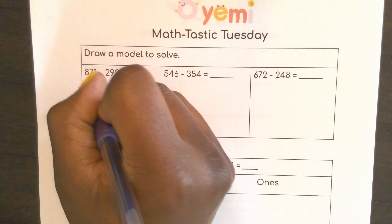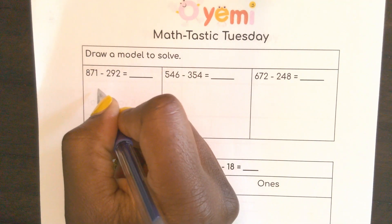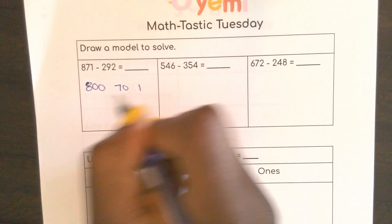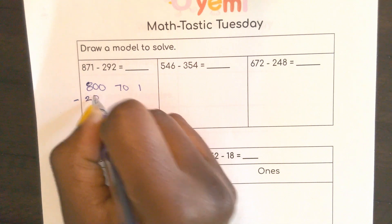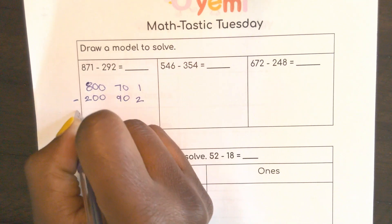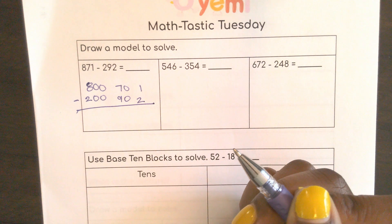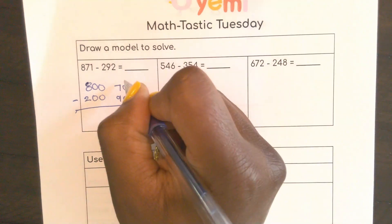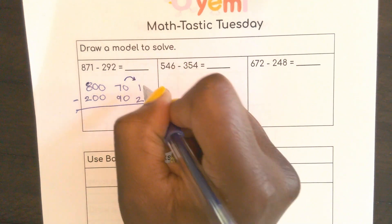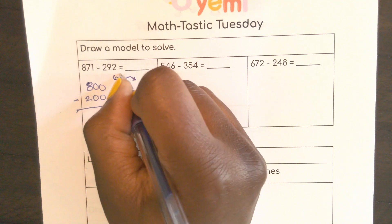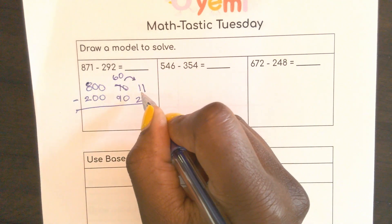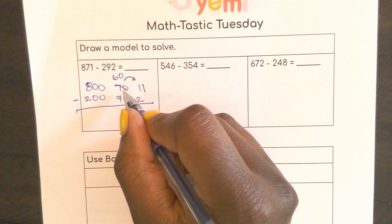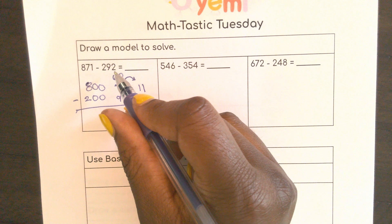So here I will start with expanded form with 871. 871 and I want to subtract 292. Remember we're always starting with that ones place. Here if I have one cookie I can't eat 2. So I have to move my 10, a process we've been doing for quite some time. I know if 10 comes over here, 10 plus 1 is 11. And if I took this 10 away and moved it here, then I have 60 up there.